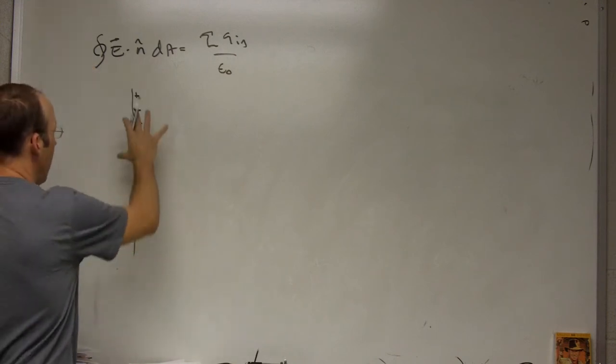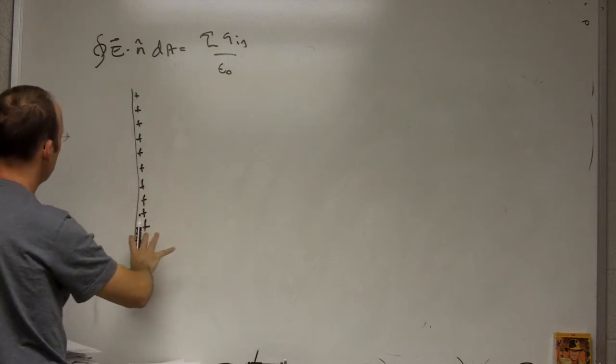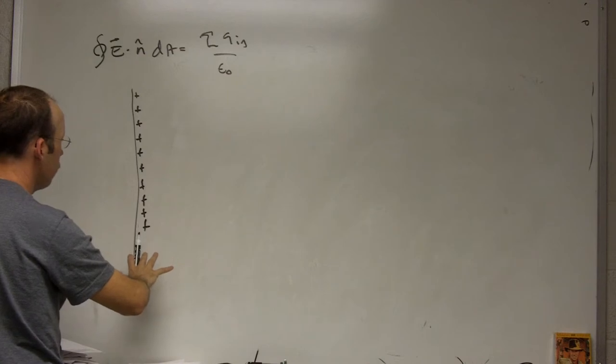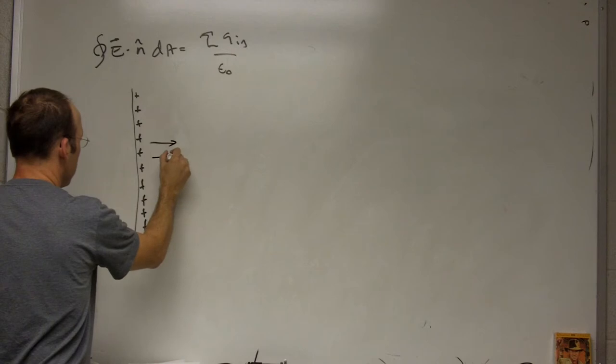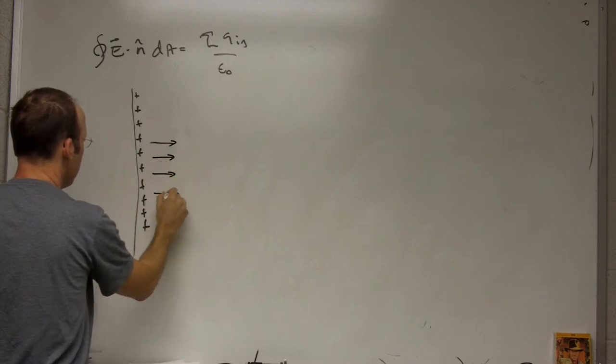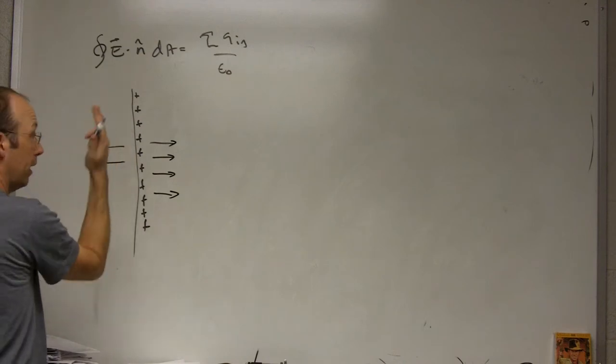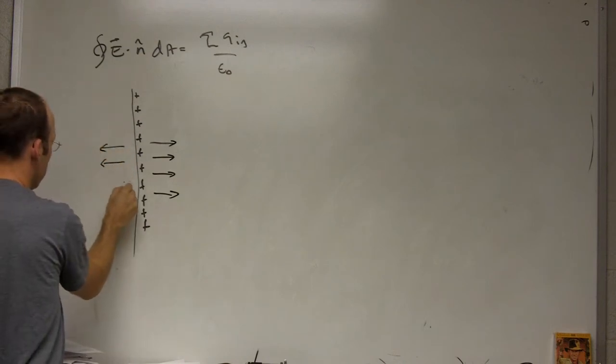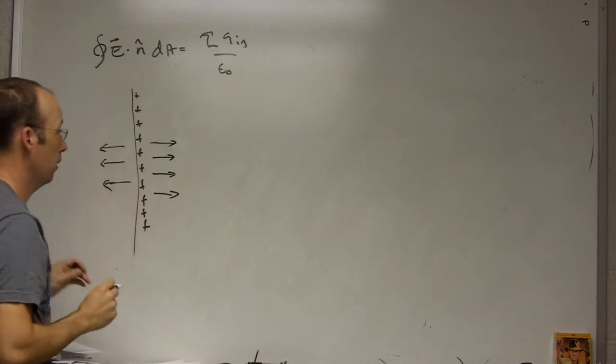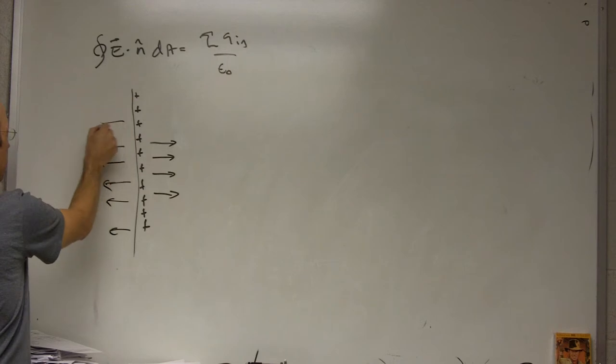In this case, I know that if the charge is uniform and it's really big and I'm close to the plate, then the electric field is going to be constant and pointing away. This is not a line, this is a plate, but I've only shown one dimension of it. It's like that, so constant electric field all the way. It's a really big plate.